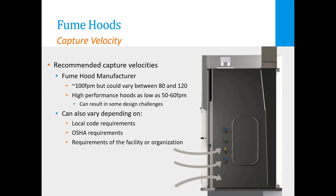While capture velocities can vary from manufacturer to manufacturer and between types of hoods, common capture velocities are typically around 100 feet per minute but could vary between 80 and 120. There are also high performance hoods that can have capture velocities as low as 50 to 60 feet per minute and remain effective at meeting minimum containment requirements. This can result in some air distribution design challenges that we'll address later. Capture velocity may also vary depending on local code requirements, OSHA requirements, or the unique requirements of the facility or organization operating the lab.